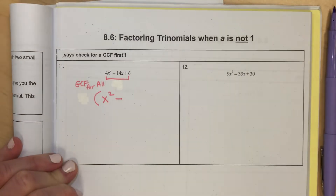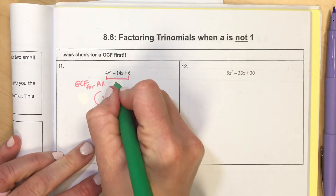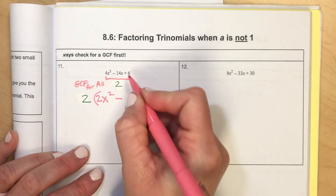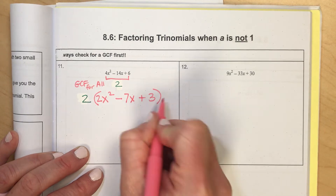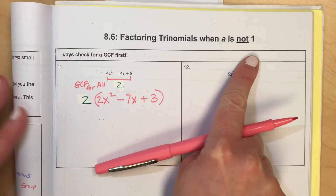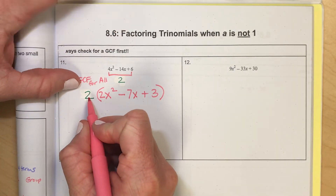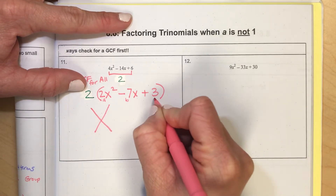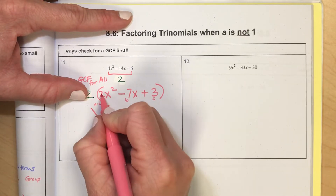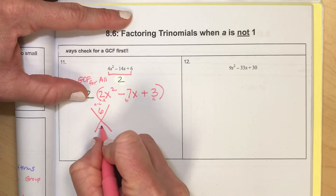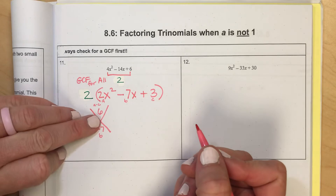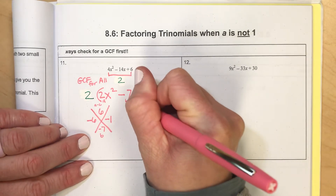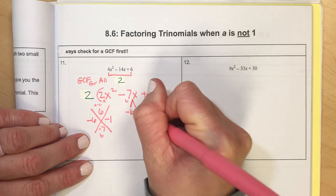So put a 2 out front. If all terms are divisible by 2, that leaves 2X squared minus 7X plus 3 inside the parentheses. Ignore the GCF for just a bit. The big X comes from this inner polynomial where A is 2, B is negative 7, and C is 3. A times C is 2 times 3, which is 6. B is negative 7. What two numbers multiply to make positive 6 and add to make negative 7? That's negative 6 and negative 1. The middle term splits into negative 6X and minus 1X.